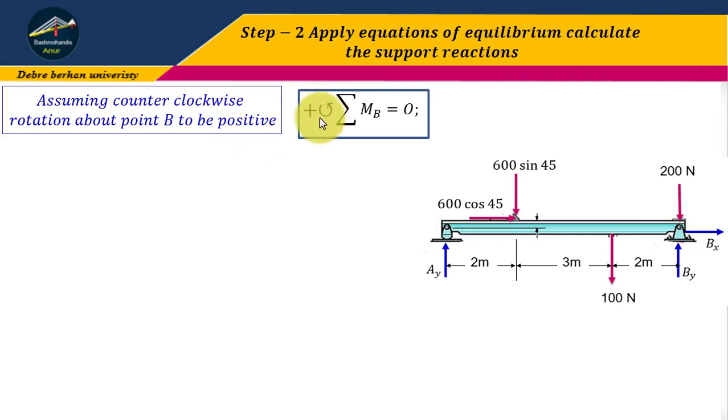Therefore, taking moment about point B. Why am I taking moment about point B? If I take moment about point B, I can simply eliminate By and Bx in this calculation, and the only unknown is going to be Ay. You can also take moment about point A, but the simplest one to eliminate two unknowns at the same time is to take moment about point B.